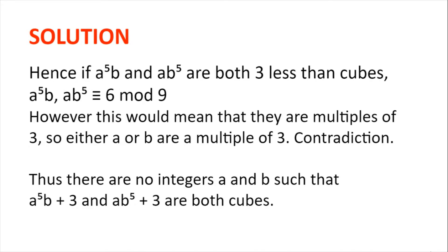So if a to the power of 5b and ab to the power of 5 are both 3 less than cubes, they are both congruent to 6 modulo 9. However, this would mean that they are multiples of 3, because a number congruent to 6 in modulo 9 is a multiple of 3. This in turn gives either a or b as a multiple of 3, which is a contradiction, as we've previously seen that neither a nor b can be a multiple of 3.